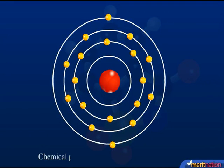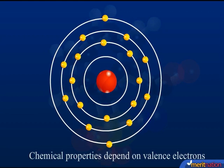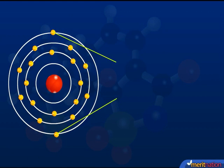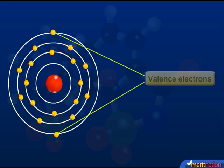The chemical properties of elements depend on the valence electrons of that element. The electrons present in the outermost shell of an atom are called the valence electrons.